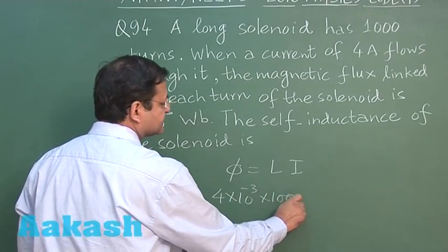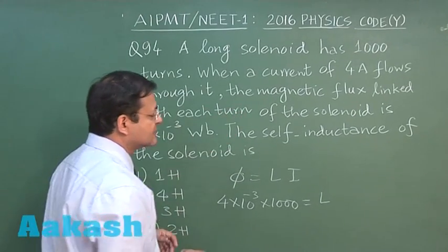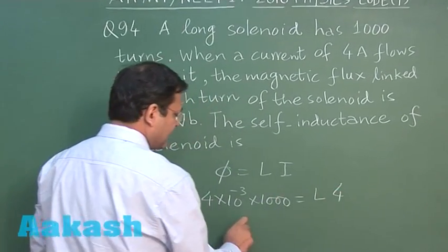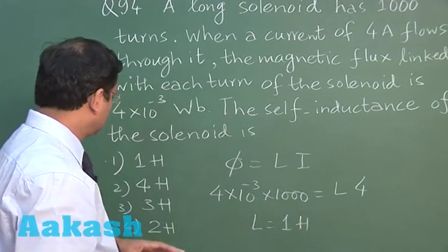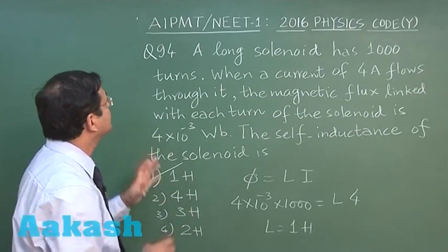Here the amount of flux is 4 into 10 to the power minus 3 multiplied by 1000 because there are total thousand turns. This is equal to L into current, current is 4 ampere, so straightaway L is equal to 1 henry. I will be marking answer 1 for this particular question 94.